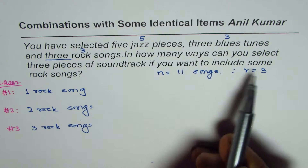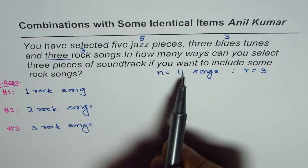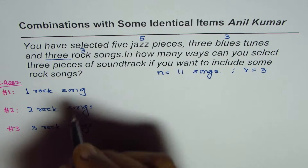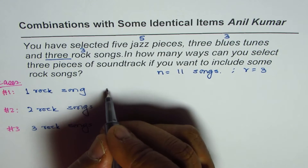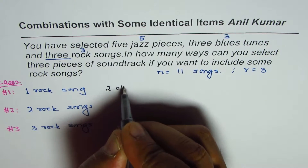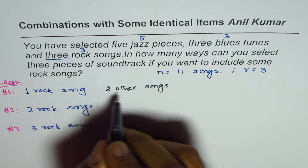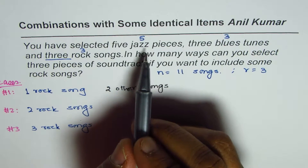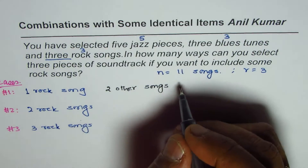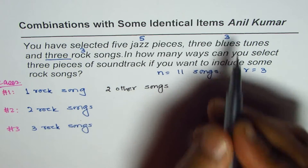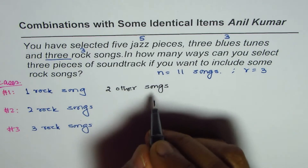You are left with ten, and you have to select two more. So you have to select two out of the remaining songs. Two other songs are from the combination of jazz and blues — we cannot select more rock. So two other songs means out of five plus three, which is eight.